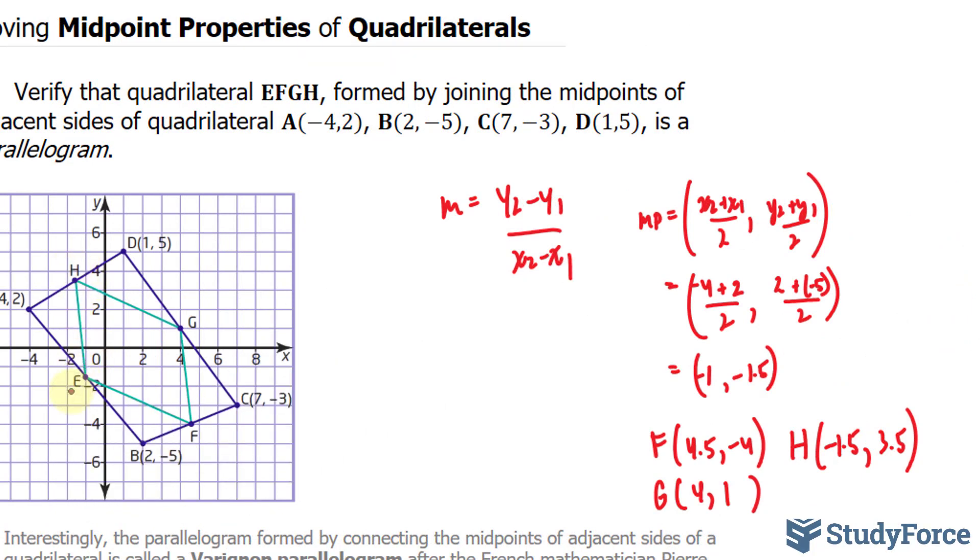So we'll start with H and E. The coordinates for H are negative 1.5 and 3.5, and recall we'll be using this formula. This point relative to E is further to the left than E is. Therefore, our second point will be E, and our first point will be H. Y2 will be the Y coordinate of E, which is negative 1.5 minus the Y coordinate of H, which is 3.5, over the X coordinate of E, which is negative 1 minus negative 1.5.